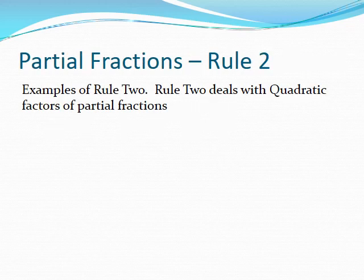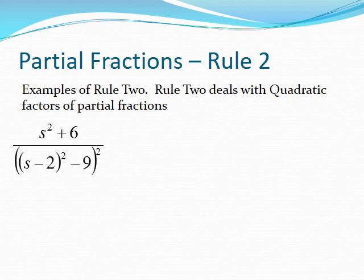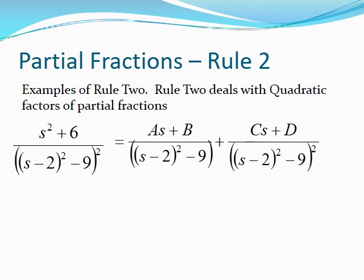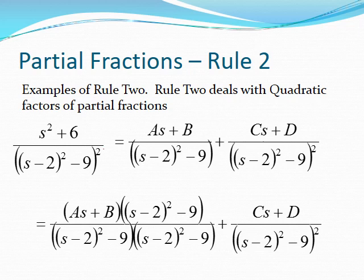Now let's apply Rule Number Two, which deals with quadratic factors of partial fractions. Given this fraction, the denominator has two powers, so we need two factors — once to the power of one and once to the squared. Because the denominator contains an s-squared term when multiplied out, we need a polynomial of one order less on top. We set up the common denominators accordingly.